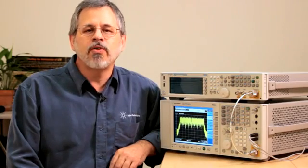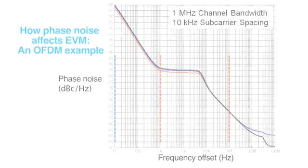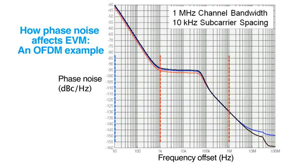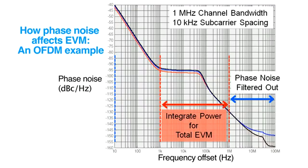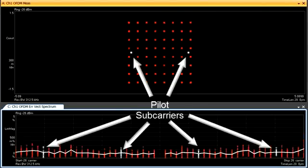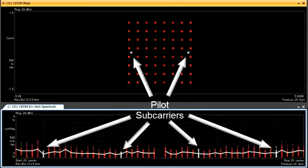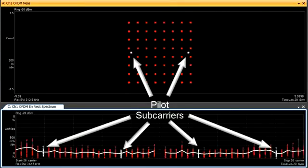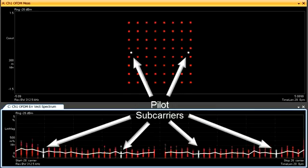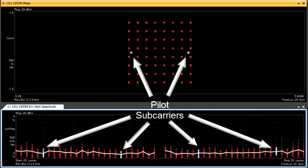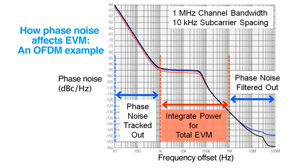But in OFDM systems, all phase noise is not the same. Phase noise at wide offsets compared to the channel is generally filtered out. Phase noise at intermediate frequencies within the channel does add to EVM. Close-in phase noise is a special case with OFDM, since the pilot subcarriers share the same phase noise as the data subcarriers, allowing tracking algorithms to track out some of the close-in phase noise. This tracking is generally effective to about 10 percent of the subcarrier spacing, making some close-in phase noise less important in real-world systems.